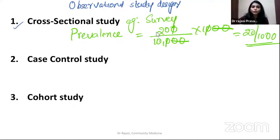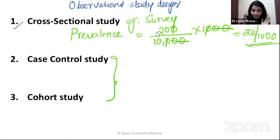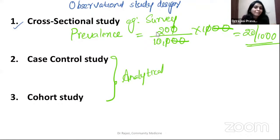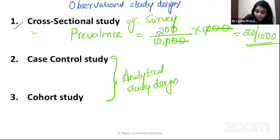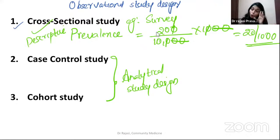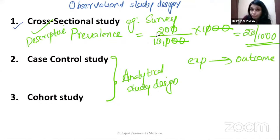Case control and cohort both come under analytical study design, because you are analyzing risk factors. Cross-sectional is a descriptive study design. In analytical study designs, you always have an exposure and an outcome, and you want to know whether the exposure is a risk factor or a protective factor for that particular outcome.